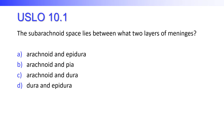The subarachnoid space lies between what two layers of meninges? Is it the arachnoid and the epidura? Is it the arachnoid and the pia? Is it the arachnoid and the dura? Or is it the dura and the epidura? It's the arachnoid and the pia — it is below the arachnoid.